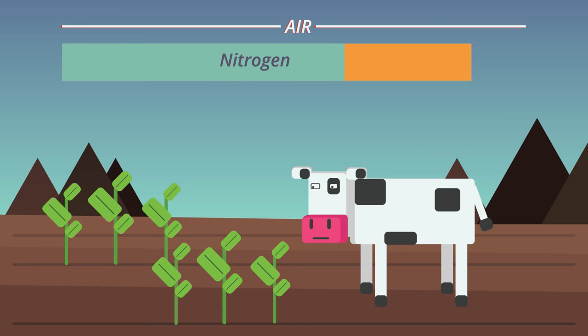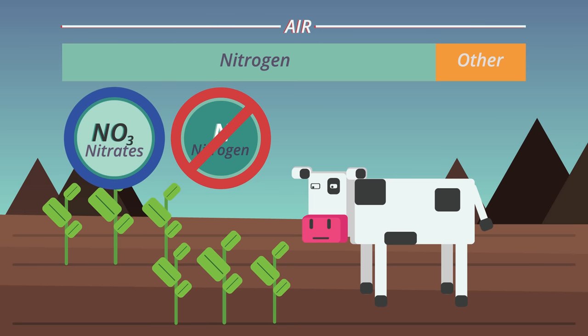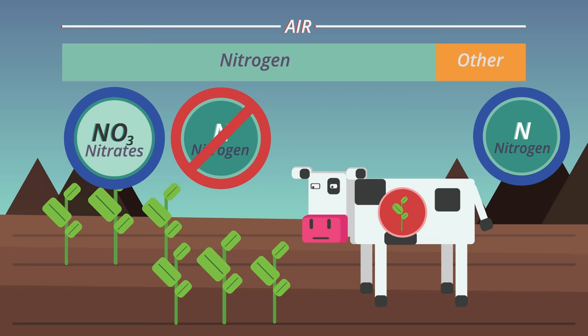Nitrogen makes up 78% of the air, however neither plants nor animals can take nitrogen directly from the air because nitrogen is so unreactive. However, plants are able to take nitrogen compounds such as nitrates from the soil, and then animals eat these plants, therefore providing animals with a source of nitrogen.